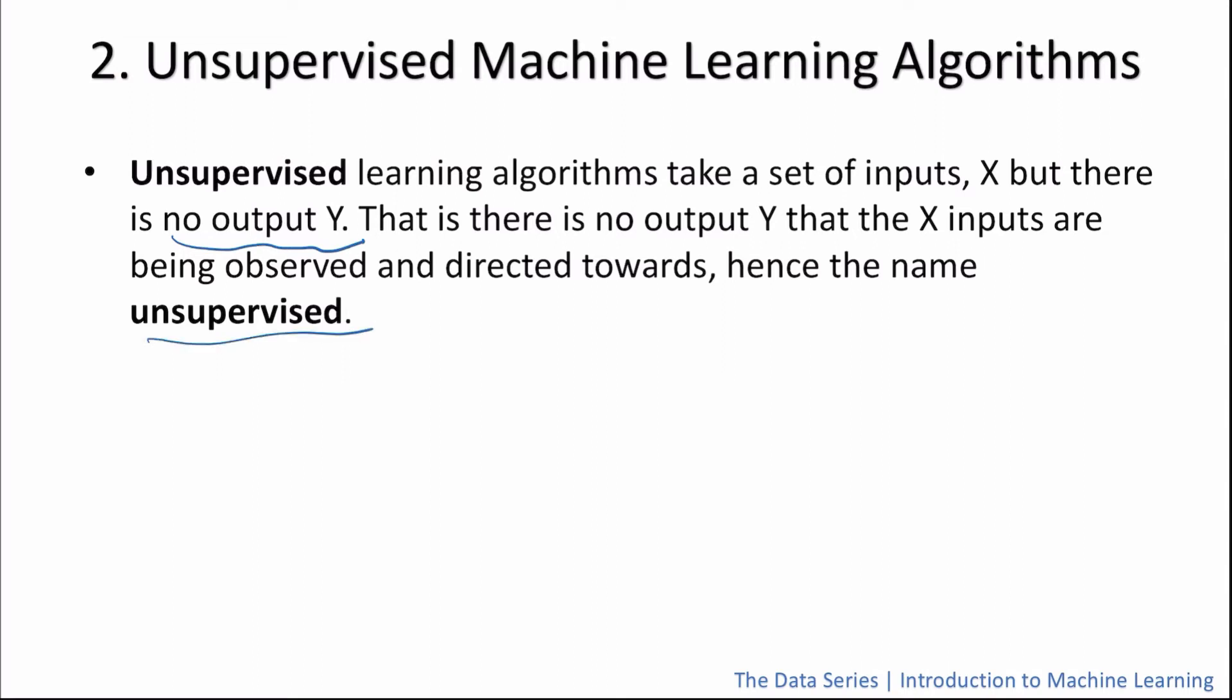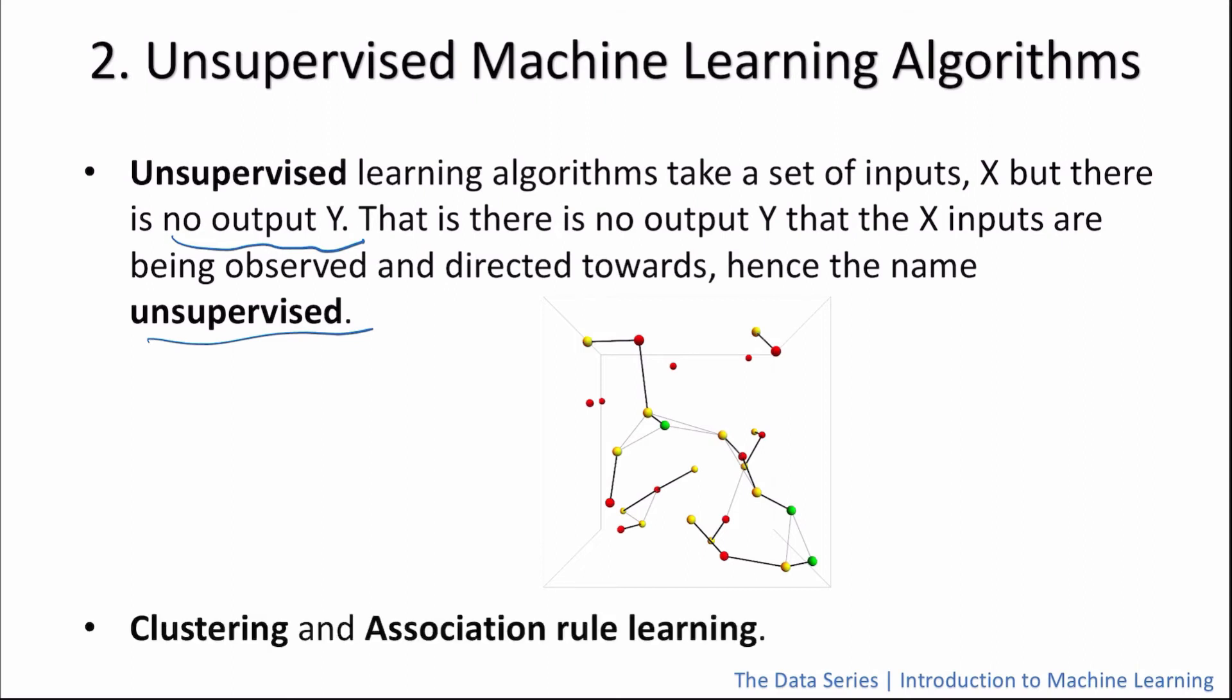Instead, the objective of unsupervised machine learning algorithms is to find any underlying structure or pattern within data to see if we can gain any useful insights. Unsupervised machine learning algorithms can be further split into two groups, depending on the algorithm's objective. These groups are clustering and association rule learning. Let's take a look at these two.